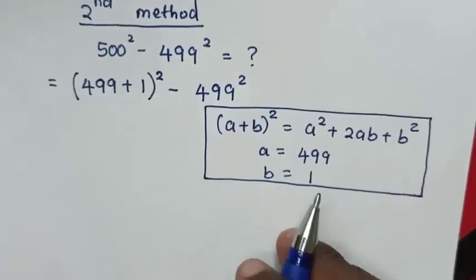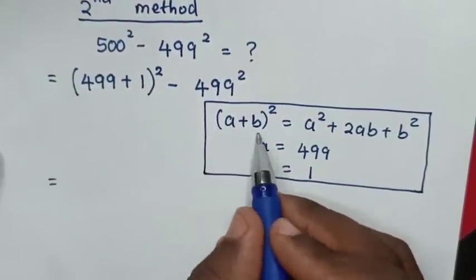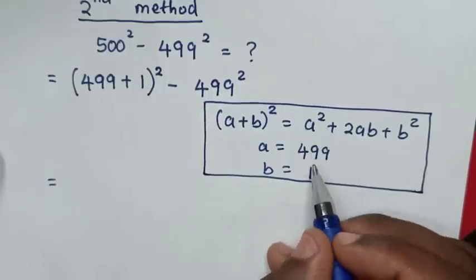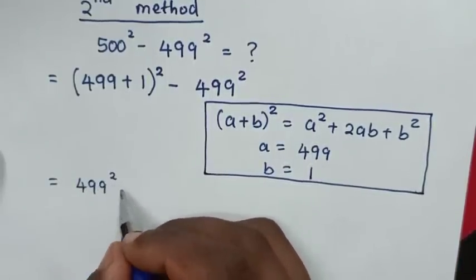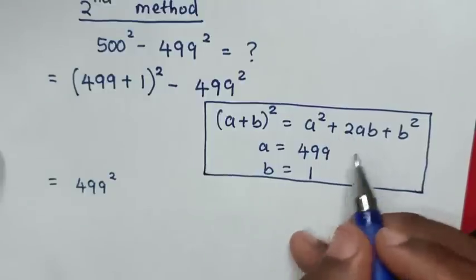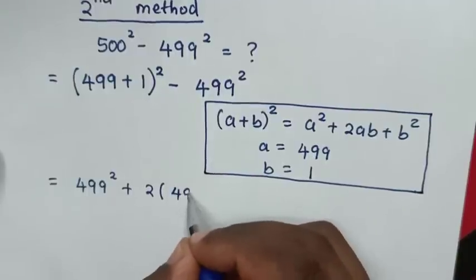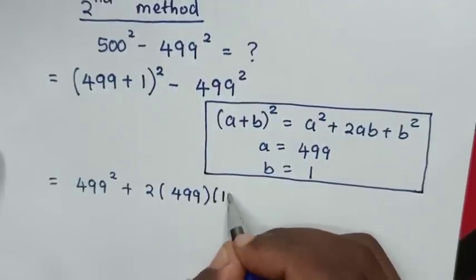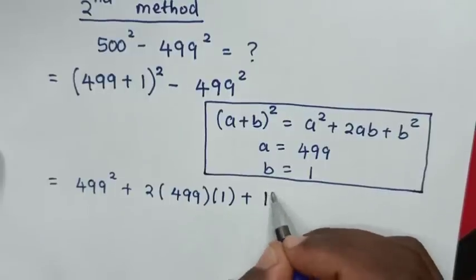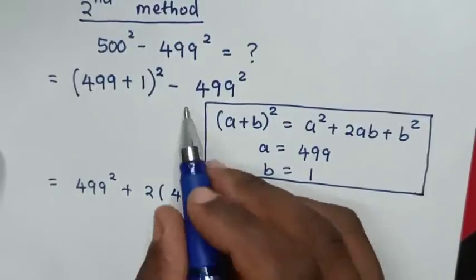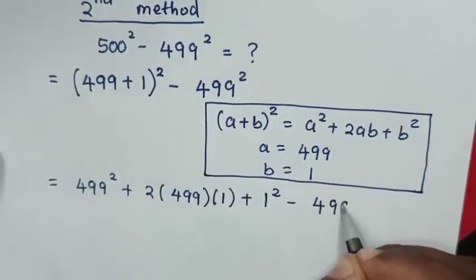Then in the next step, our expression will be equal to — because this part is in this form, which is also in this form. So A square, it will be 499 square, then plus 2AB, so it will be plus 2 times A is 499 times B is 1, then plus B square is 1 square, then minus this, so it will be minus 499 square.